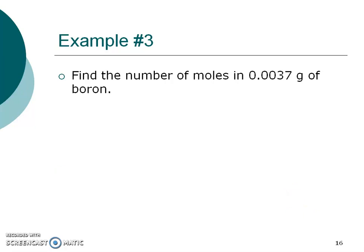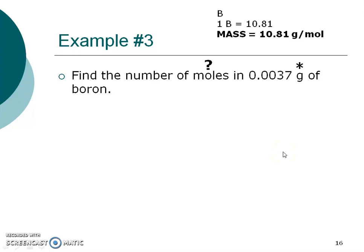Example 3: find the number of moles in 0.0037 grams of boron. Find the number of moles — that's my question mark — and I'm starting with grams. If I'm starting with grams, I need the mass of my substance. Boron is an element, so pause the video, find boron, and find its mass. Hopefully you found boron to be atomic number 5 with a mass of 10.81.